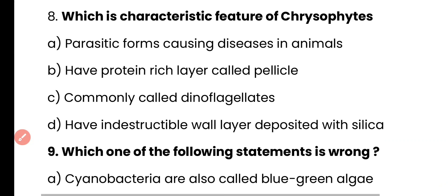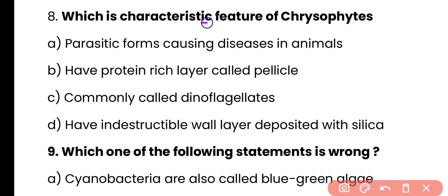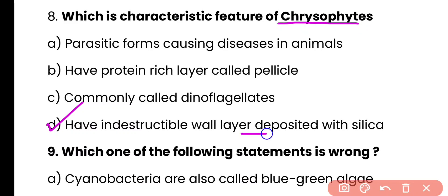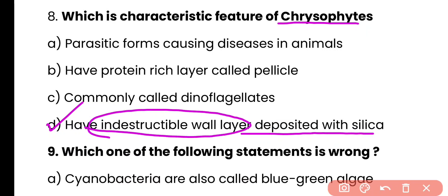Question number 8. Which of the following is a characteristic feature of chrysophytes? Parasitic forms causing diseases in animals; they have a protein-rich layer called pellicle; commonly called dinoflagellates; or they have an indestructible wall layer deposited with silica? Correct answer is option D. Chrysophytes, which include diatoms, have a cell wall deposited with silica, making it indestructible.